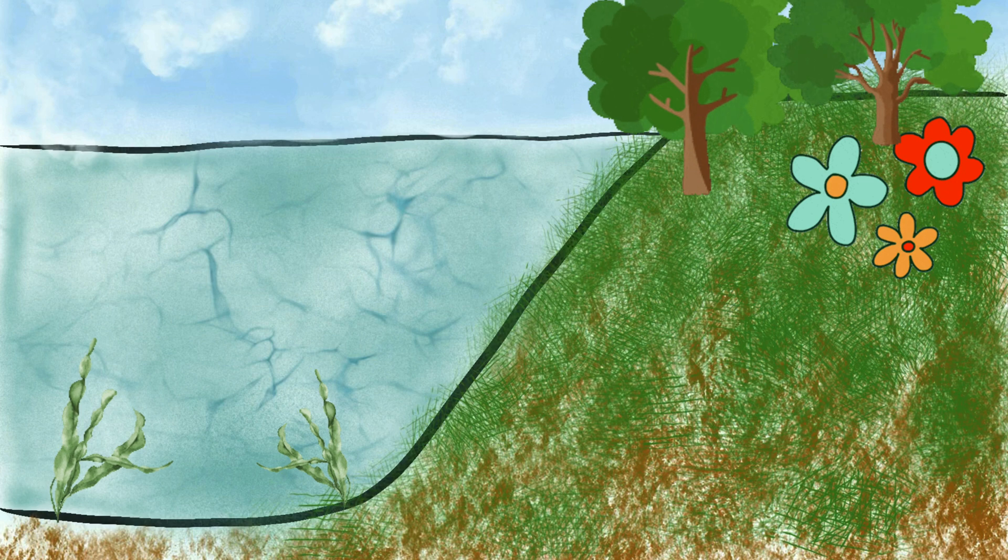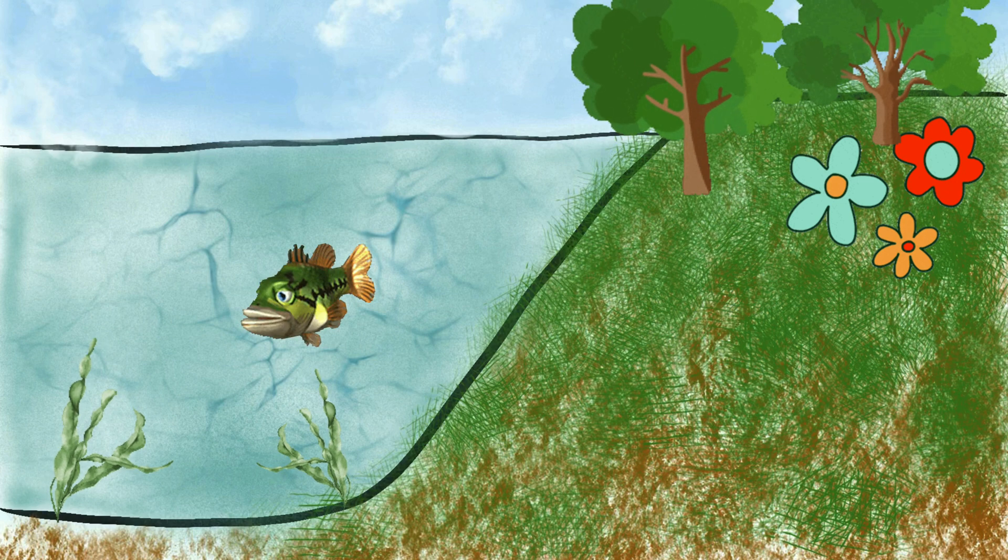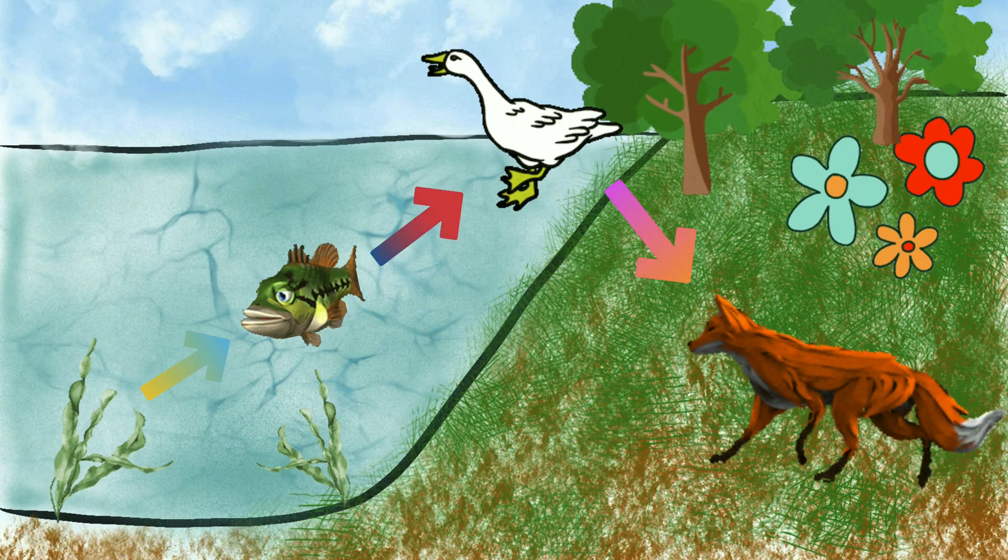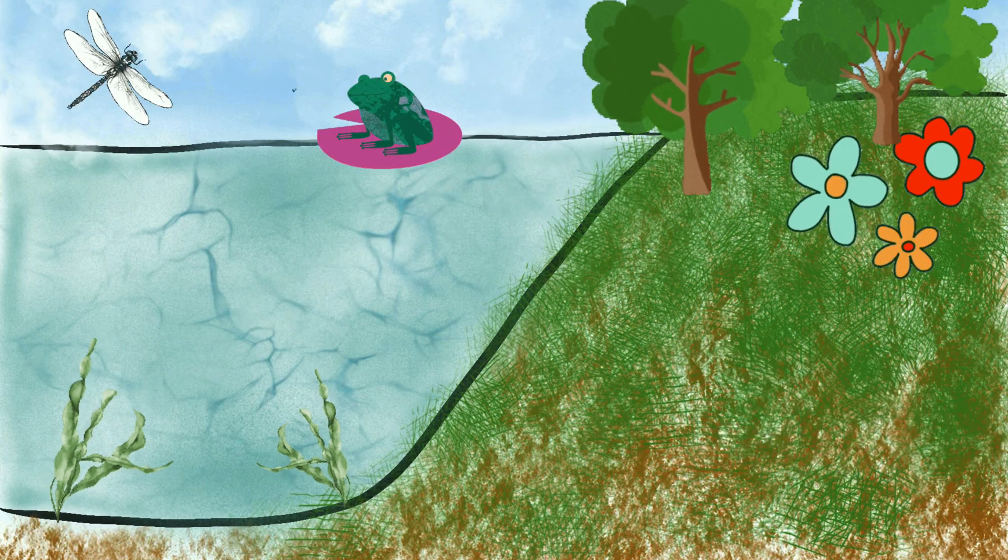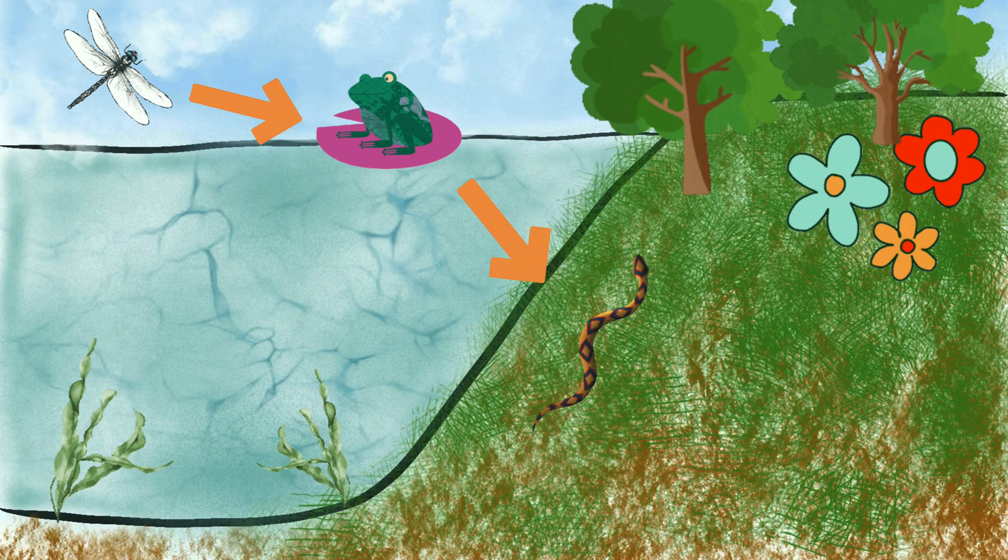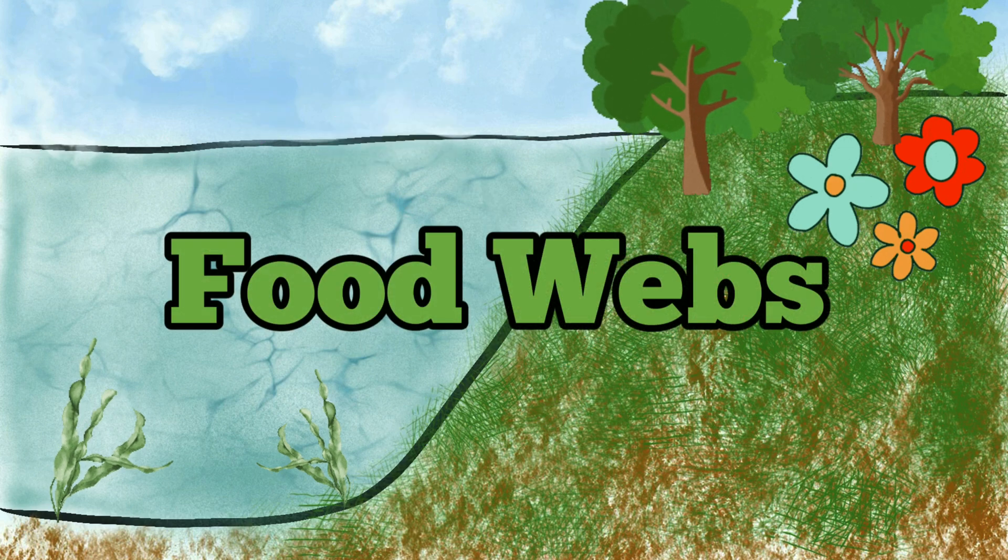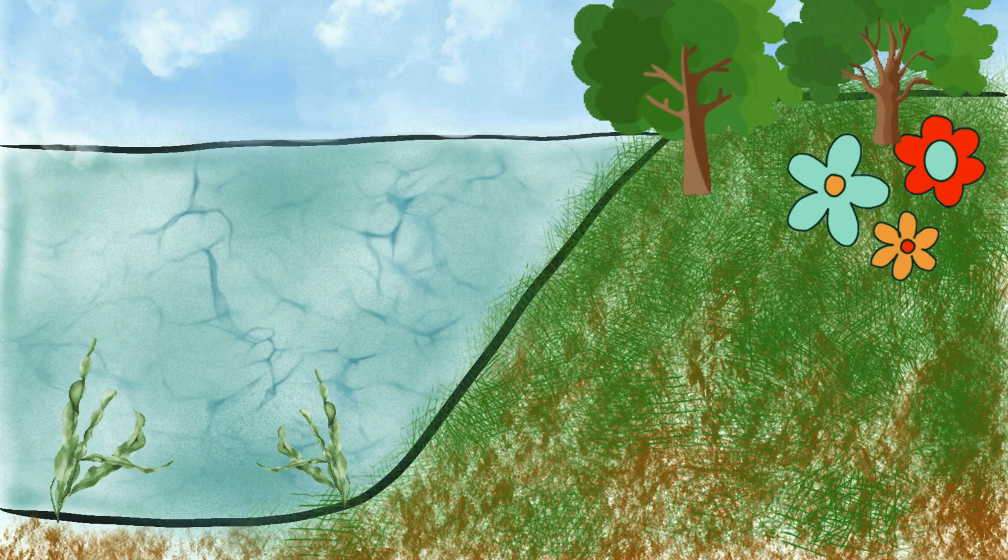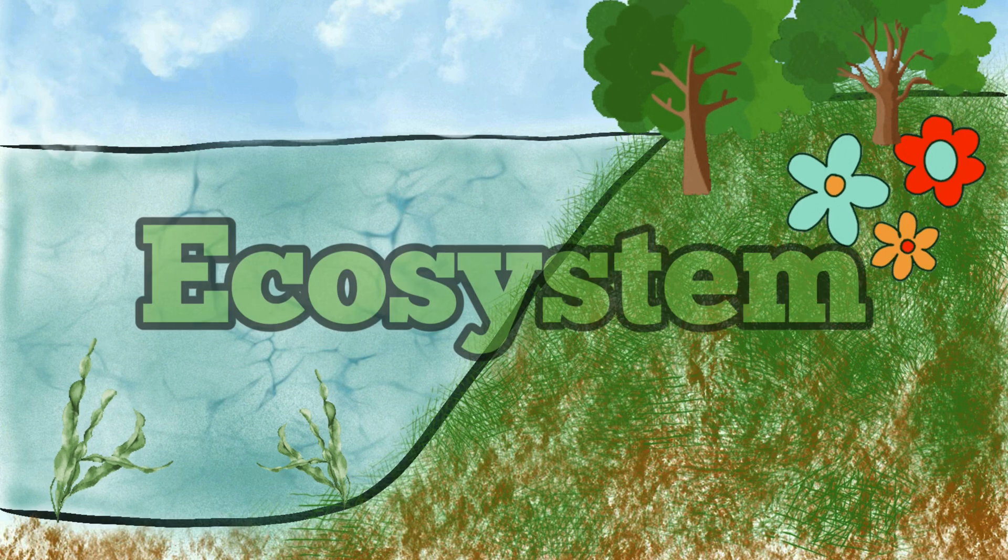Now, did you know that fish eat algae, ducks eat fish, and foxes eat ducks? Or, that frogs eat bugs, and snakes eat frogs? These are called food webs. Do you see how these plants and animals need one another? They depend on each other to survive. This is called, you guessed it, an ecosystem.